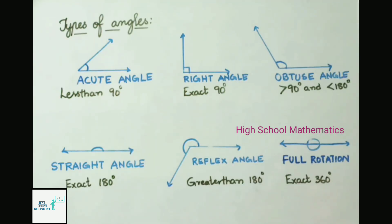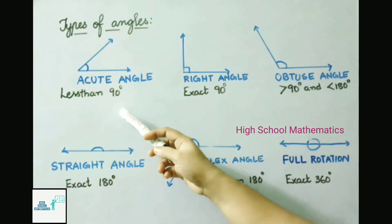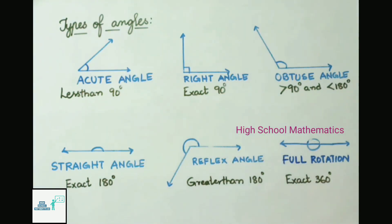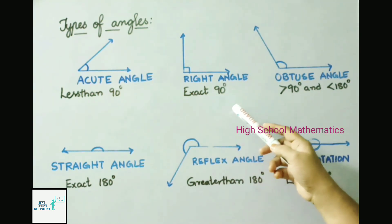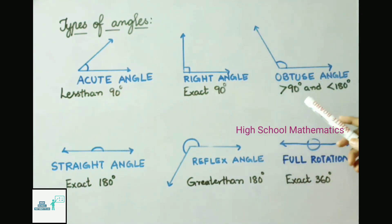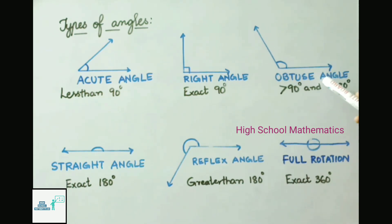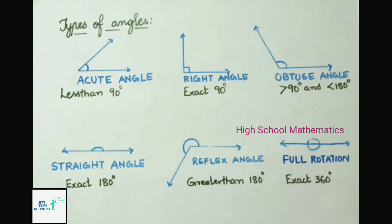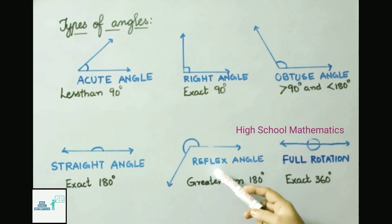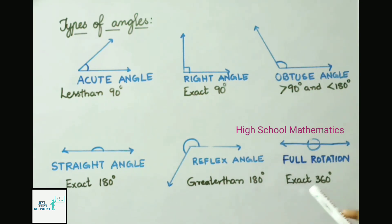Types of angles: if an angle is less than 90 degrees it is an acute angle; exactly 90 degrees is a right angle; greater than 90 and less than 180 degrees is an obtuse angle; exactly 180 degrees is a straight angle; greater than 180 degrees is a reflex angle; and exactly 360 degrees is a full rotation.